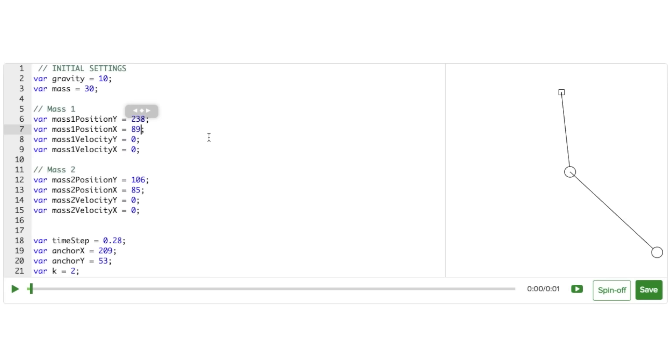Recall in Lesson 1, we used multiple springs connected together like this to model hair. In this video, I'm going to show you how to add a second spring and mass to your system.